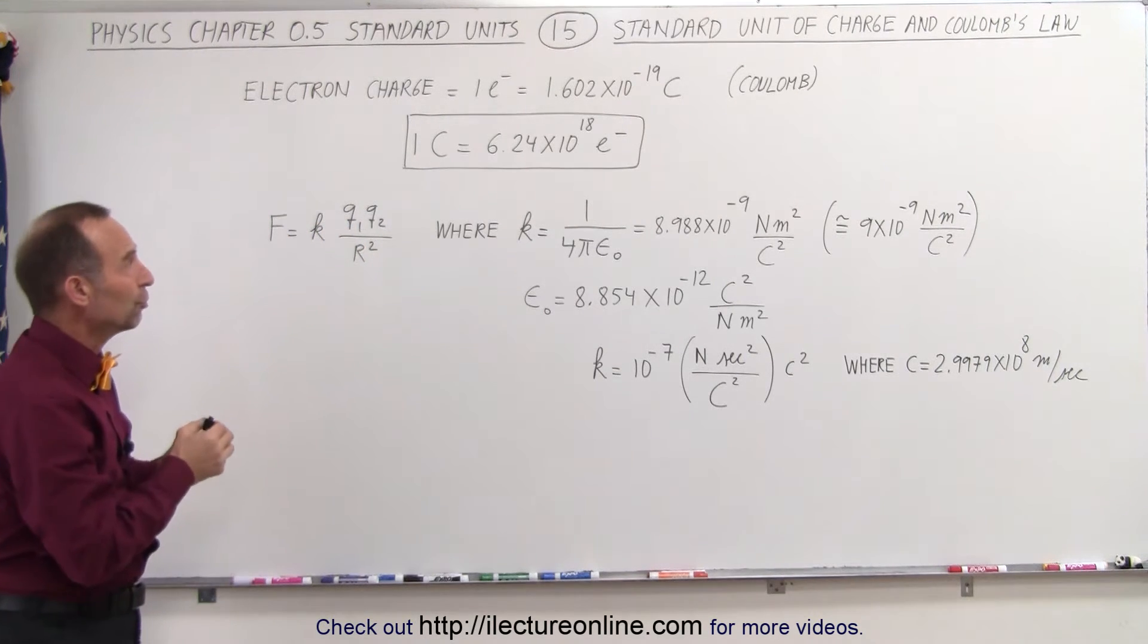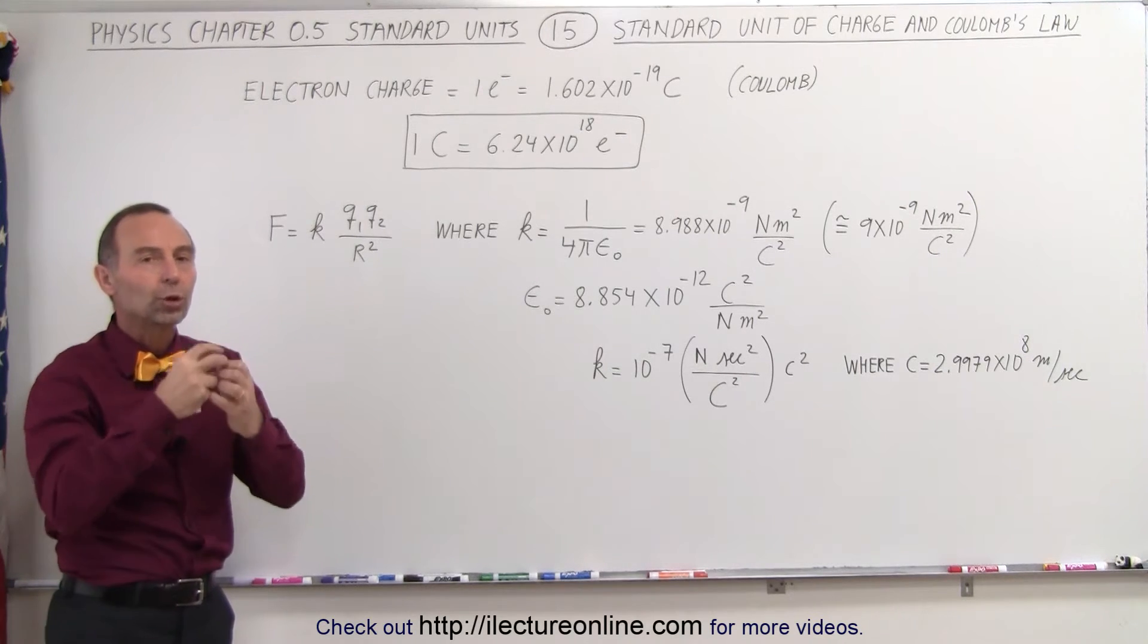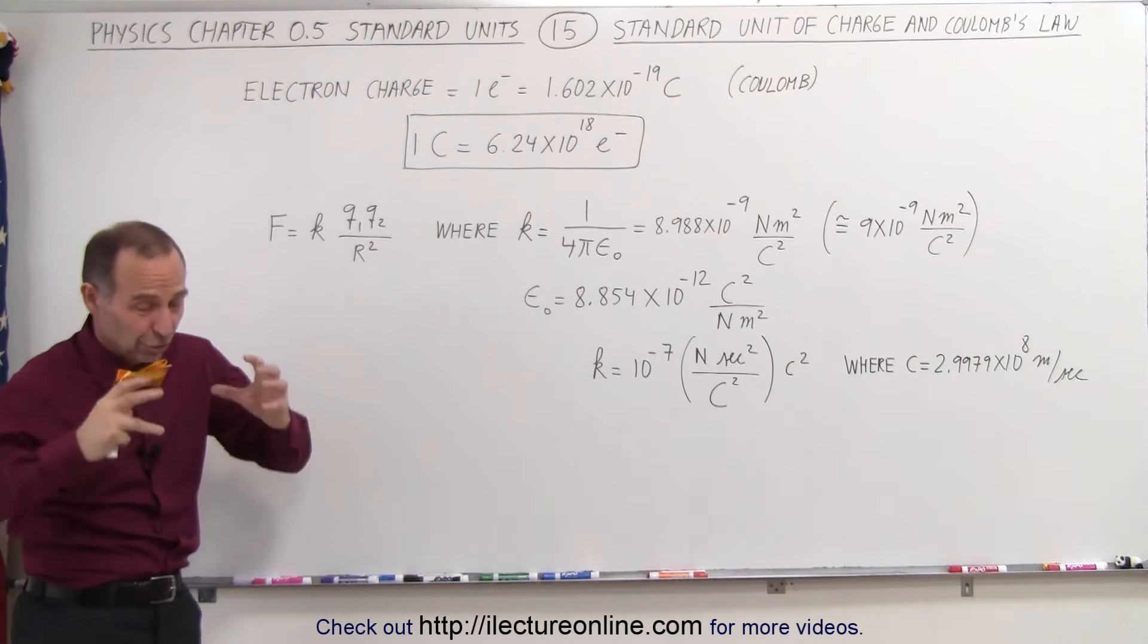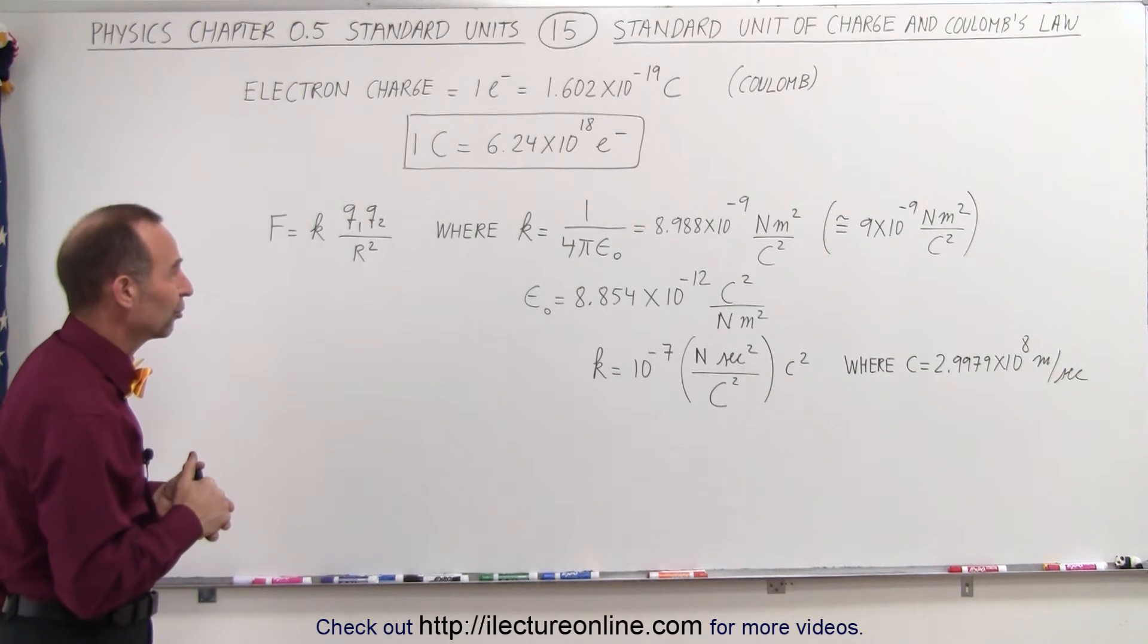When you put together 6.24 times 10 to the minus 18 electrons, you'll have 1 coulomb of charge. That would be hard to do, to sequester that many electrons, because they repel each other with an enormous amount of force.